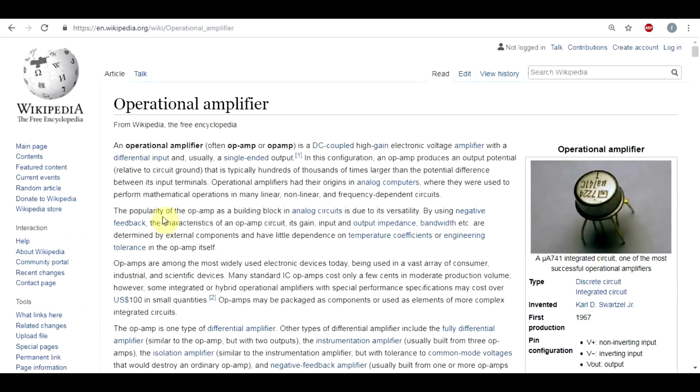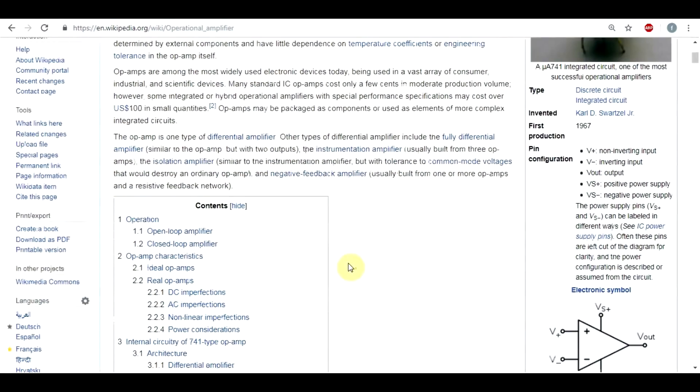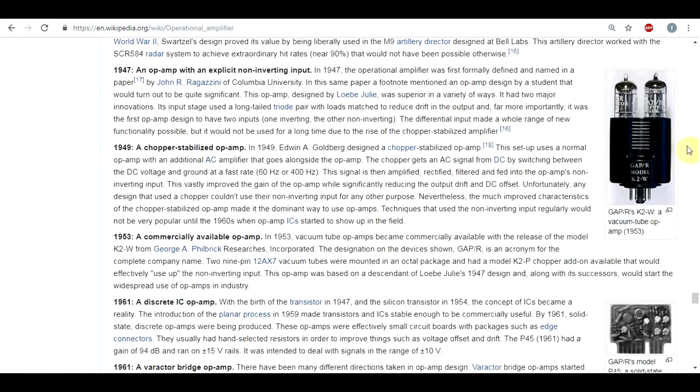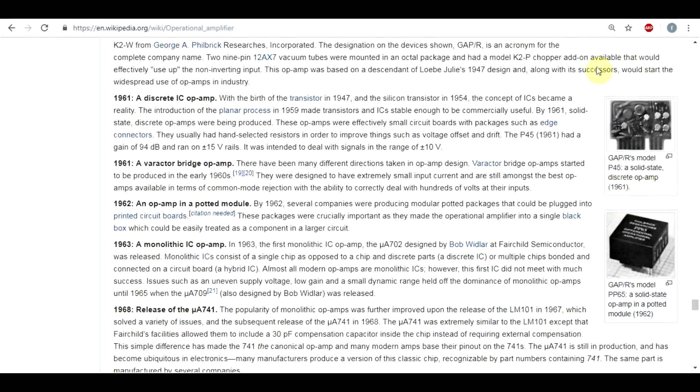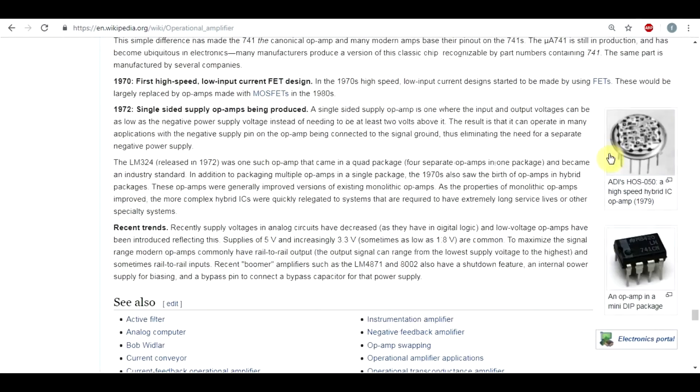But that does not mean that an op amp can only be made as an integrated component. The very first commercial op amp was actually made with vacuum tubes. And then the first solid state ones appeared, made from discrete components. And only later did the first integrated versions appear.